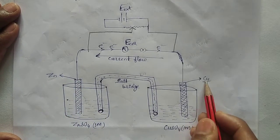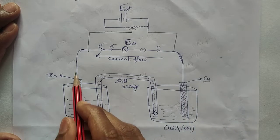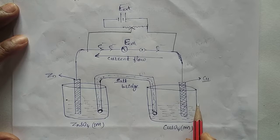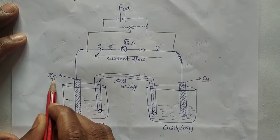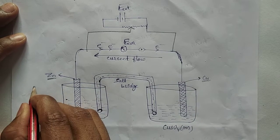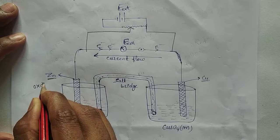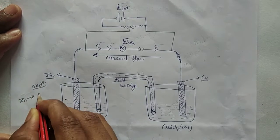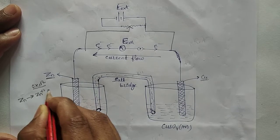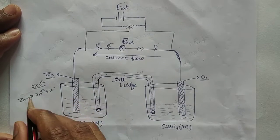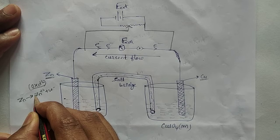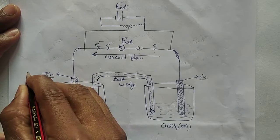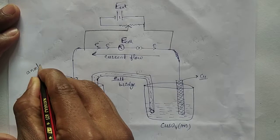In the Daniel cell, the zinc electrode is dipped in zinc sulfate and the copper electrode is dipped in copper sulfate. These two are connected externally by wires and internally by a salt bridge. As we know, zinc has a tendency to undergo oxidation — the reaction is Zn → Zn²⁺ + 2e⁻. The zinc electrode, undergoing oxidation, is known as the anode.